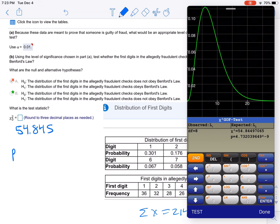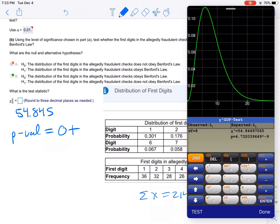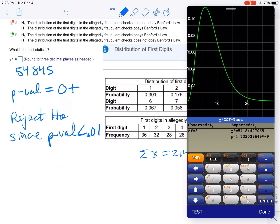And then we... so yeah, we're gonna read the conclusion. We're going to reject H-naught since the p-value is less than 0.01.